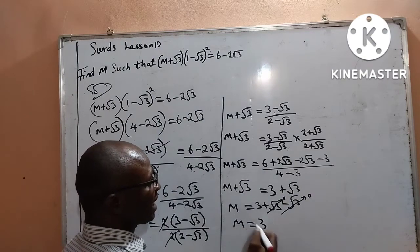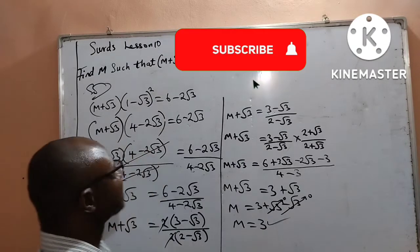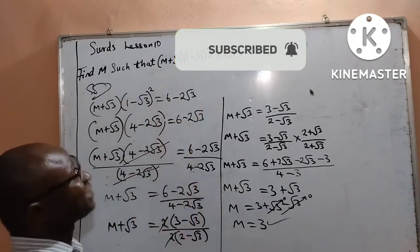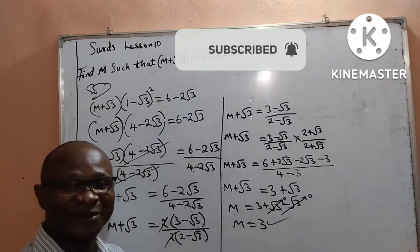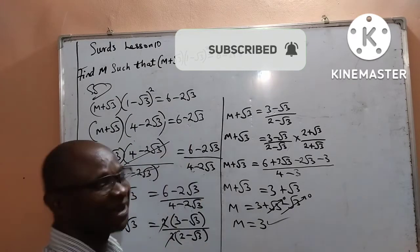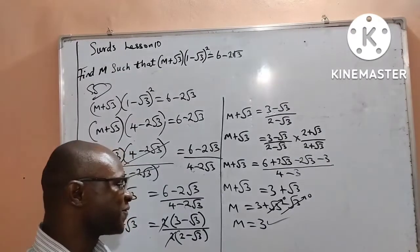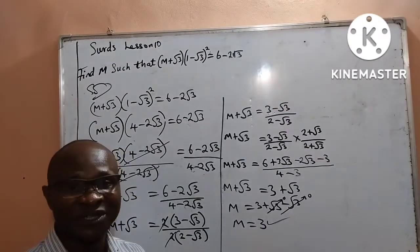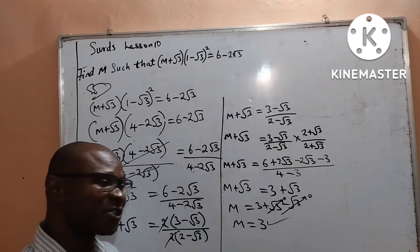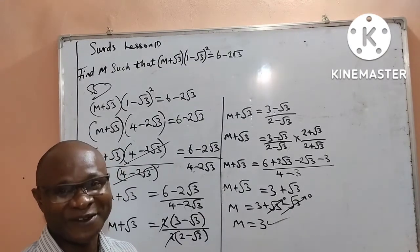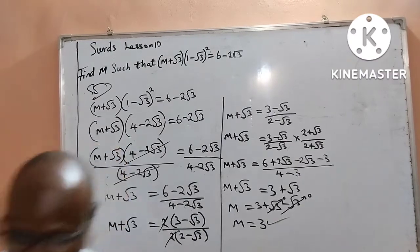We are left with m equal to 3. This is our final answer, and that is what we are required to find. The value of m in that given question is 3. Thank you for watching this video to the end. Like I promised, this was not going to be long. Give me a thumbs up, and if this is your first time watching my videos, please do subscribe. God bless you.